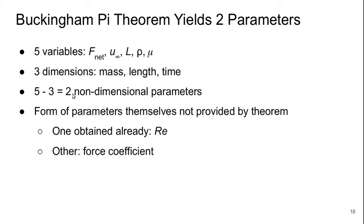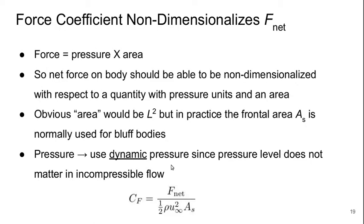Basically, the force coefficient non-dimensionalizes the net force. A force is a pressure times an area. So we would expect the net force on the body should be able to be non-dimensionalized with respect to a quantity that has pressure units and then also some area. Now, the obvious area would be L squared. But in practice, for cars, the frontal area, which we dub A sub S, is normally used for cars and other bluff bodies.